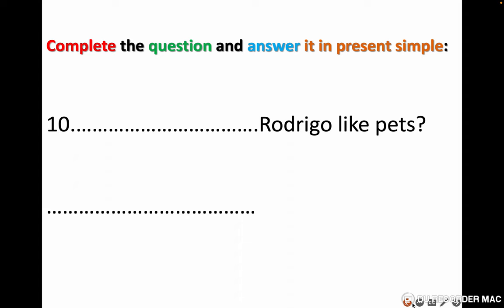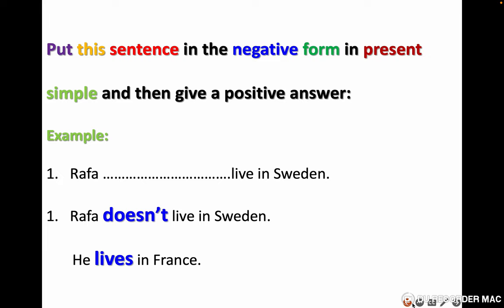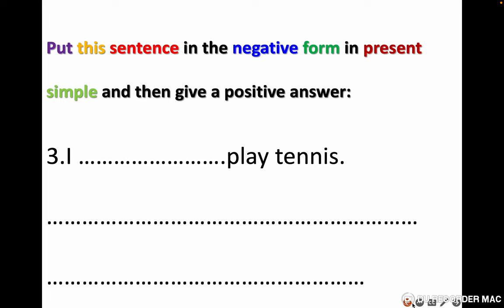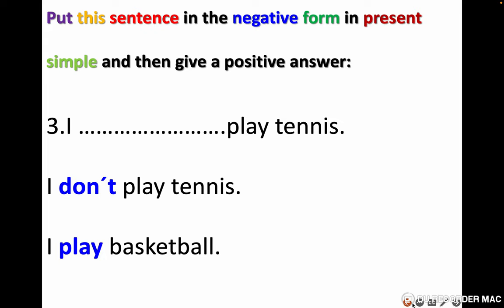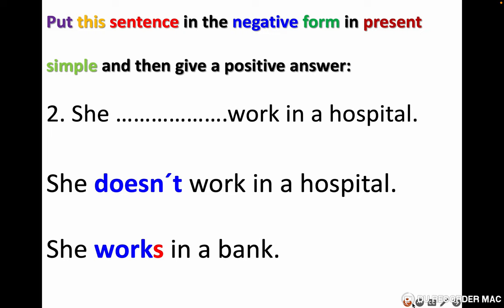Number eleven: put these sentences in the negative form in present simple and then give a positive answer. Example: Rafa lives in Sweden — answer: Rafa doesn't live in Sweden, he lives in France. Number three: I play tennis — answer: I don't play tennis, I play basketball. Number two: she works in a hospital — answer: she doesn't work in a hospital, she works in a bank.